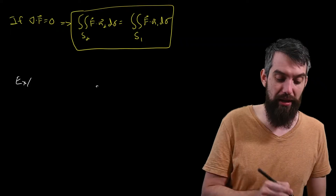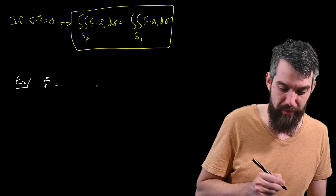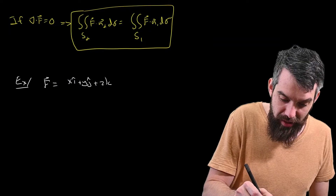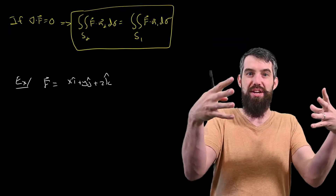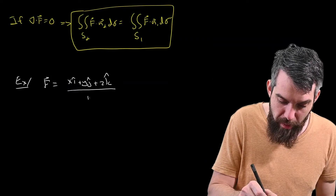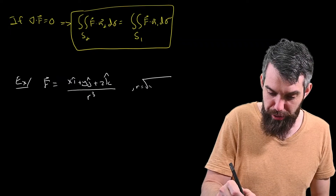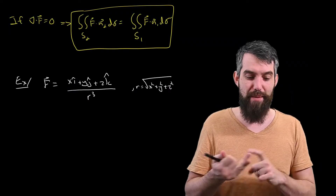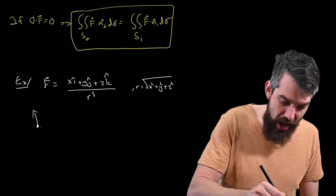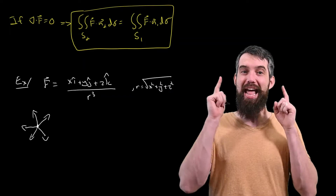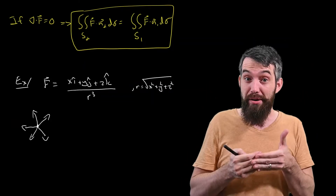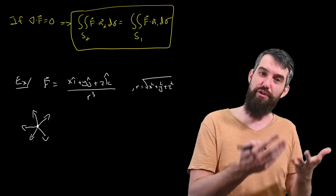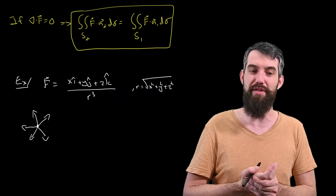I'm going to give an example with an electric field. I'm going to imagine that my field F has x in the i-hat, y in the j-hat, and z in the k-hat — so it's kind of like a source field, pointing out at every point. Then I divide it by r cubed, where r is the familiar square root of x² + y² + z². This type of field represents both the electric field and the gravitational field — a point source radiating outward with a 1/r² magnitude dependence.